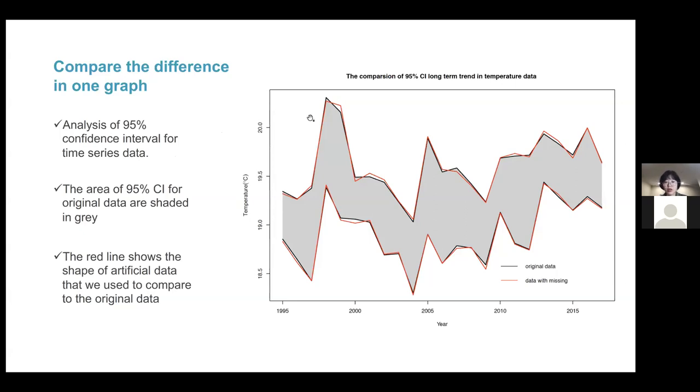I use gray shading and black lines to draw the edge of the interval for one data frame, which is our original data. For the other data frame, where I made some individual artificial missing values, I use red lines to draw the edge, but there's no shading for these intervals.